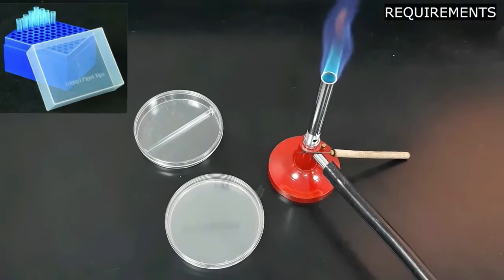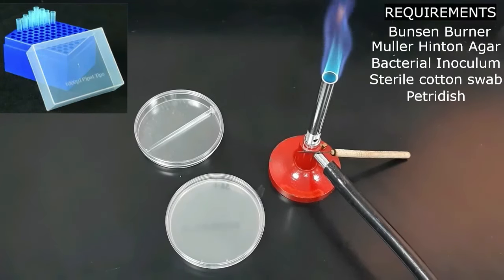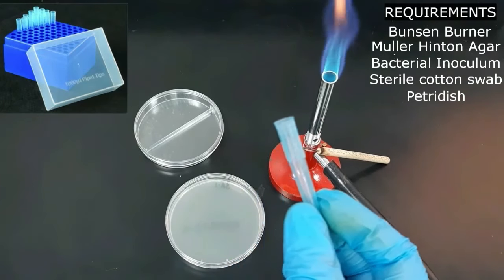To perform the well diffusion assay, first we will see the requirements needed: a Bunsen burner, Muller Hinton agar, petri dishes, a needle, and a blue 1 ml micropipette tip.